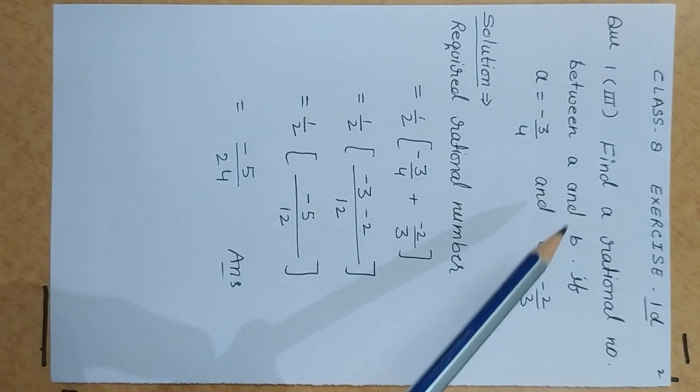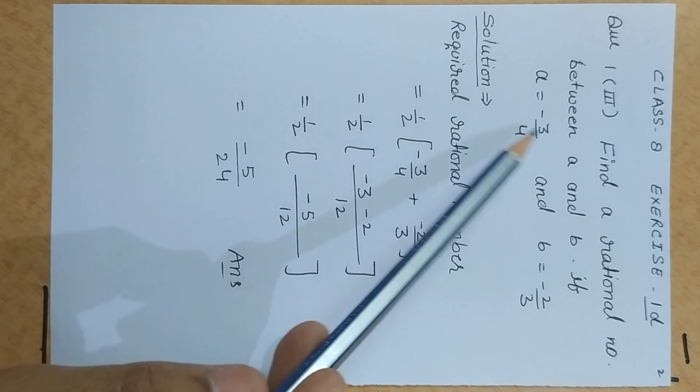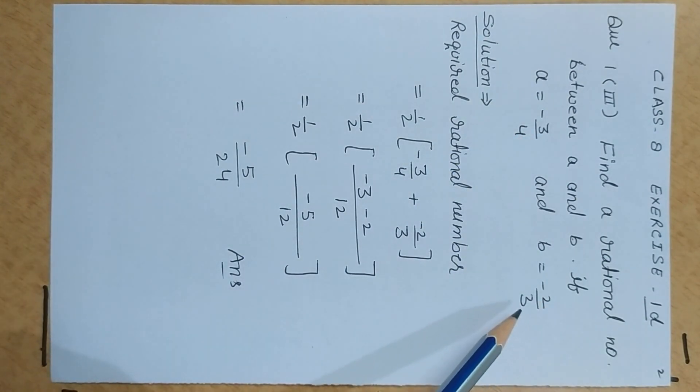Now, 1st question, 3rd part. Find a rational number between a and b if a is equal to 3 by 4 and b is equal to minus 2 by 3.